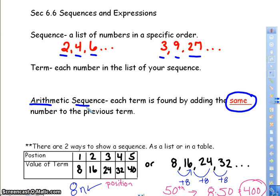Your sequences are going to be set up in both tables and as lists. In the table, they're going to tell you the position of the number, and this is just telling you what term it is in the sequence. This is my first term, second, third, fourth, and fifth, and then this gives you the actual value of the term. You can also see that they just list them out, so this is first, second, third, fourth. Whatever way is easiest for you to understand is fine.